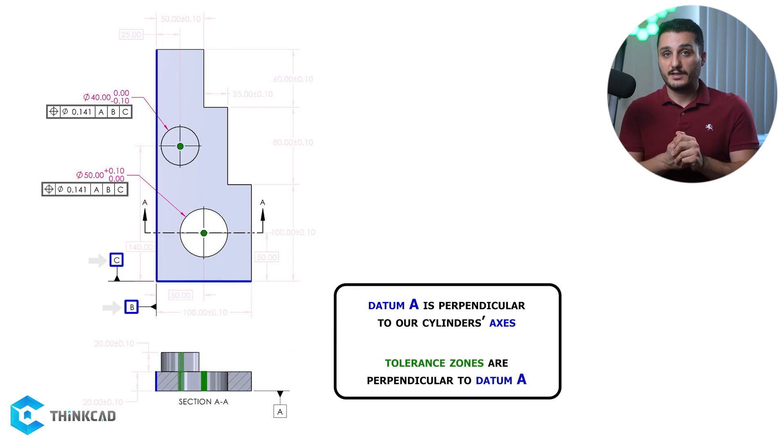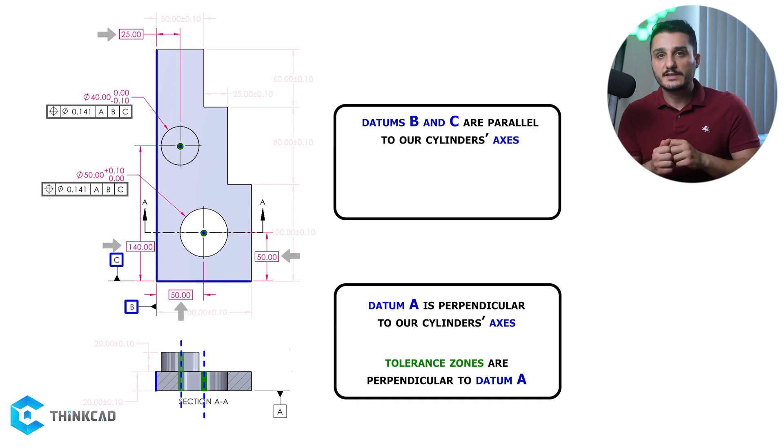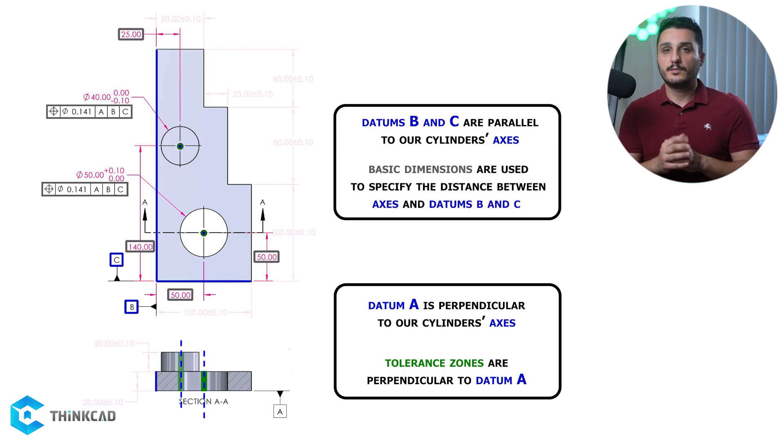Now B and C are different. They are parallel to your axes. This means that you need to specify the distance from your axes to your two datums and put them in a box. These are basic dimensions and their tolerance is 0.141 mm defined in your feature control frame.